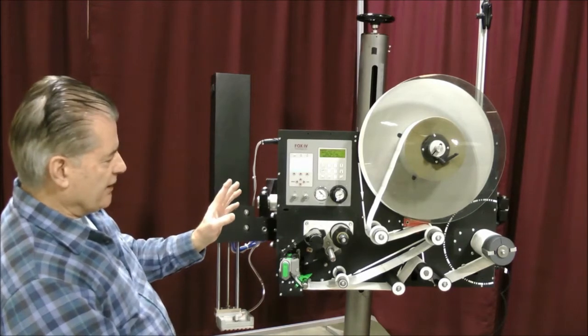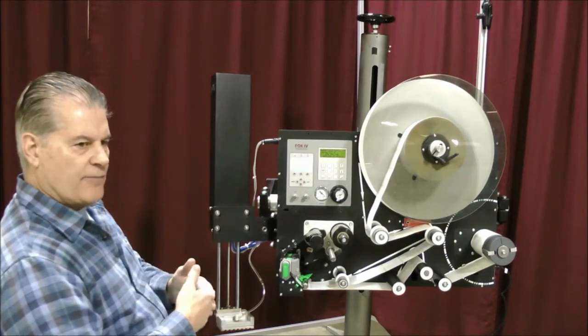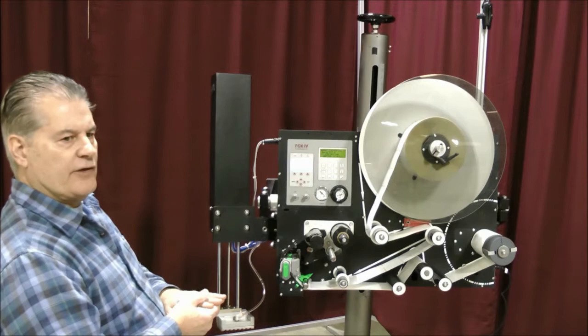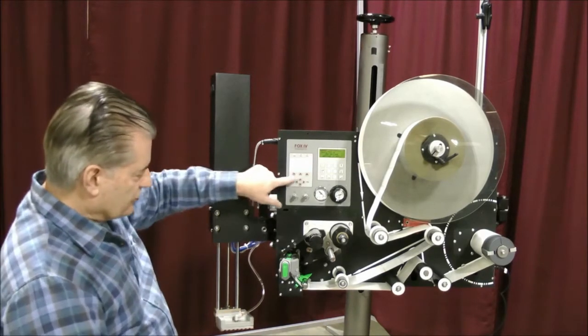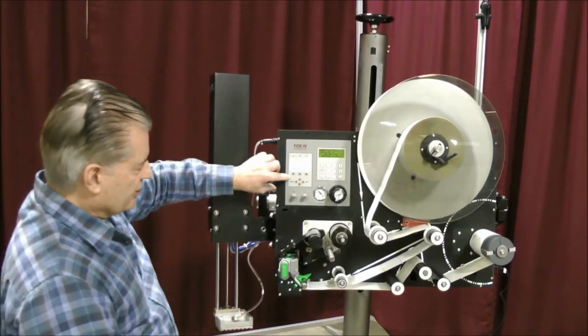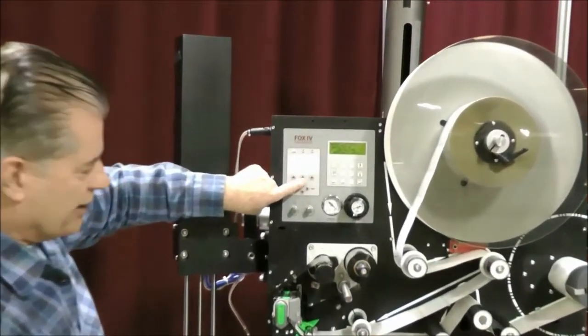So, the first calibration would be what they call the top of form. If you're getting a top of form fault on your screen, it's a very simple process. You just press the feed button, which is rotated in the middle.